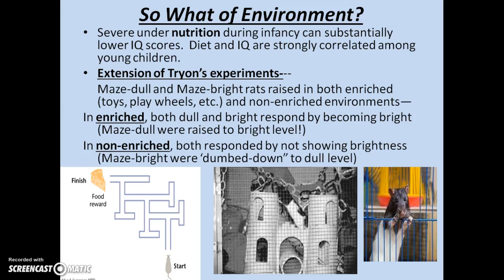What about environment? Severe undernutrition during infancy can substantially lower IQ scores, and diet and IQ are strongly correlated among young children. In an extension of Tryon's experiments, maze-dull and maze-bright rats were raised in both enriched and non-enriched environments. In the enriched environment, both dull and bright rats became better at running mazes — the maze-dull rats were raised to the bright level. In the non-enriched environment, both responded poorly — even the maze-bright were dumbed down to the dull level. It seems environment is really the most important thing.